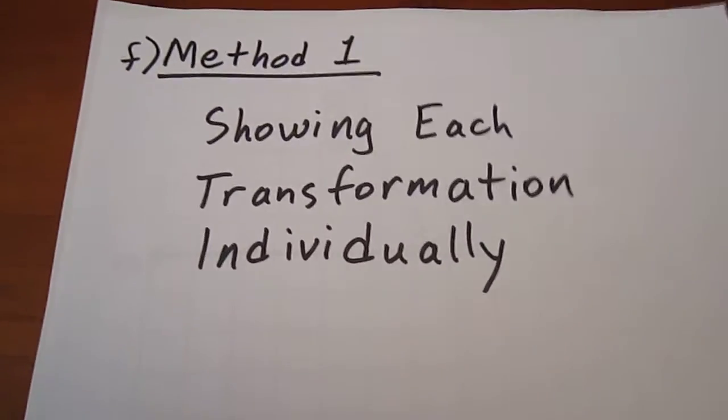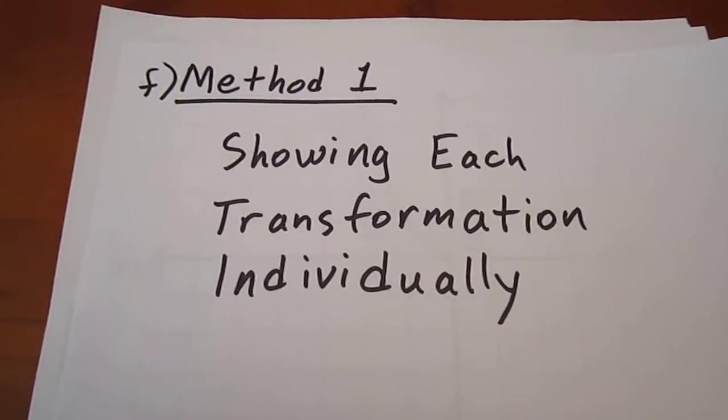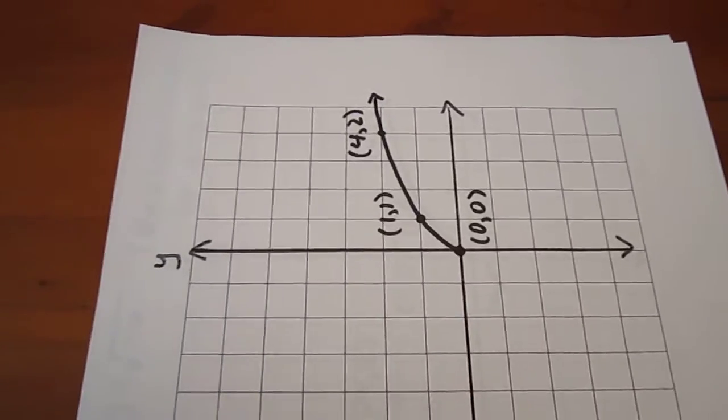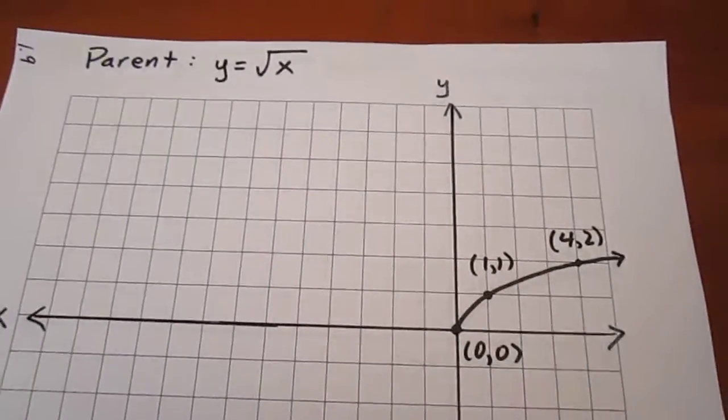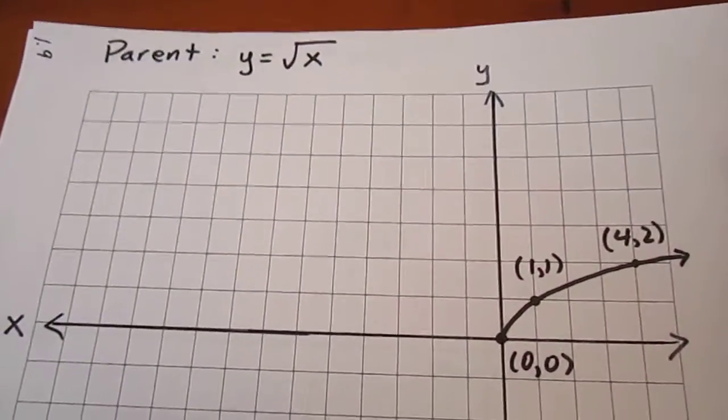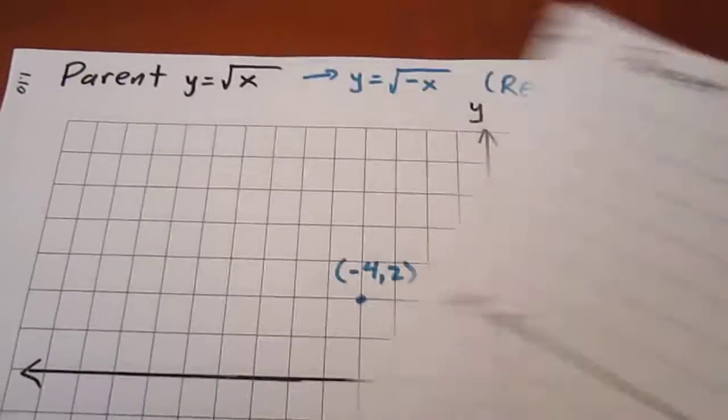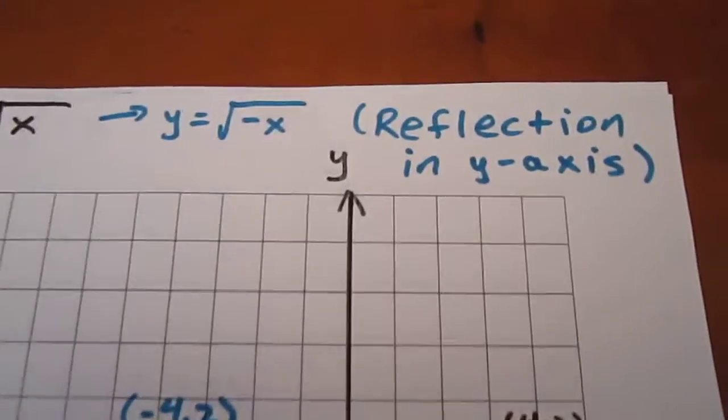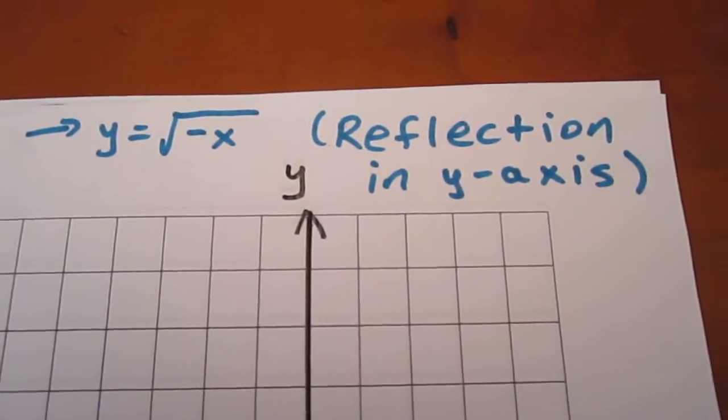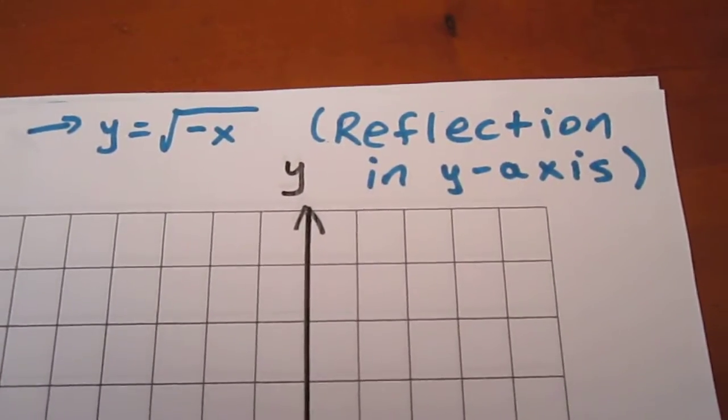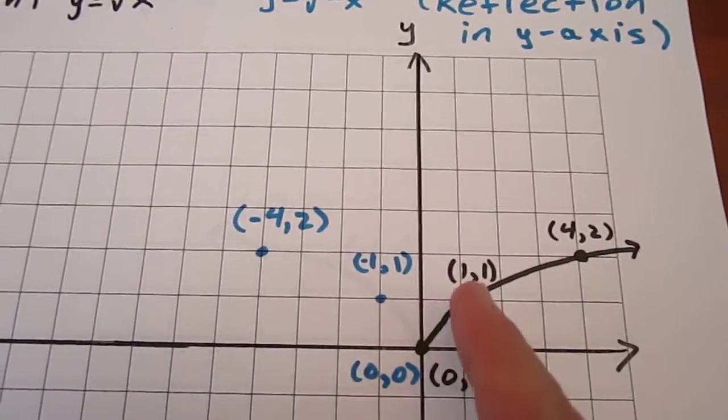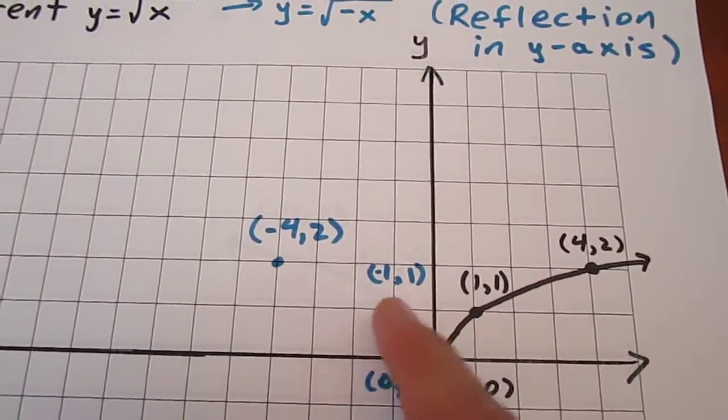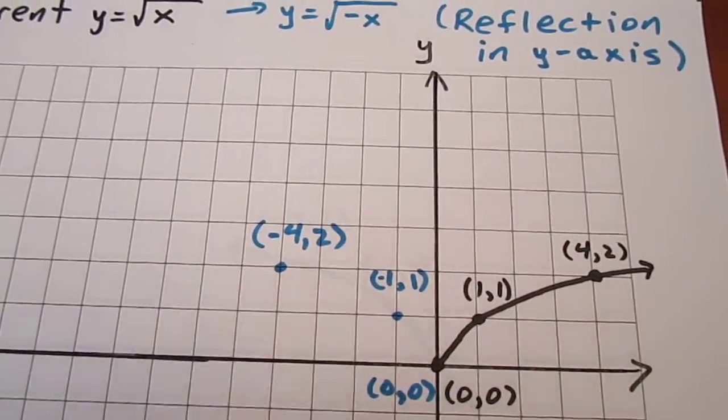So we can then show each transformation individually. Now, this isn't the most efficient way of doing it, but it works. And it gives us a good visual as to what the effects of the various transformations are. We start with the parent function. We then show the first transformation which we chose to state, which is a reflection in the y-axis.